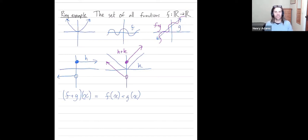Addition is commutative. Every function has an additive inverse. The additive identity is the zero function, which is just flat. To get an inverse of a function, you just reflect it.